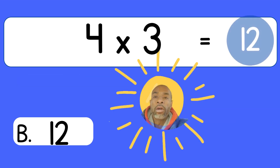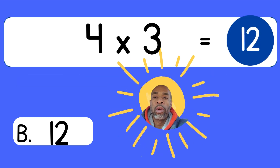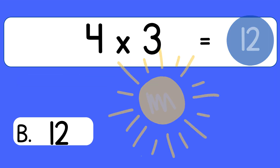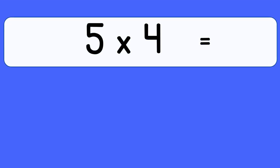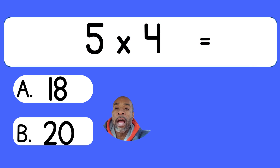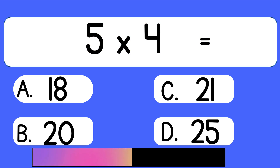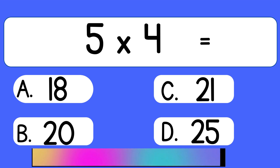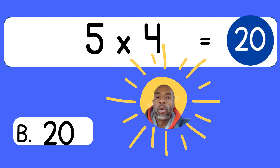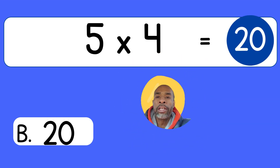4 times 3 equals 12. 5 times 4. 5 times 4 equals 20.